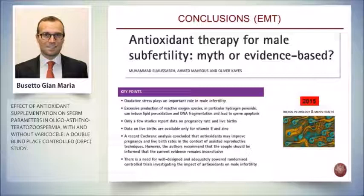Key points from current knowledge: oxidative stress plays an important role in many cases of infertility; excessive ROS, particularly hydrogen peroxide, can induce lipid peroxidation and DNA fragmentation; only a few studies report data on pregnancy rate and live birth; data on live birth are available only for vitamin E and zinc; antioxidants may improve pregnancy and live birth rate in the context of ART; and well-designed, adequately powered, randomized controlled trials are still needed — which is the main reason this remains empirical therapy.